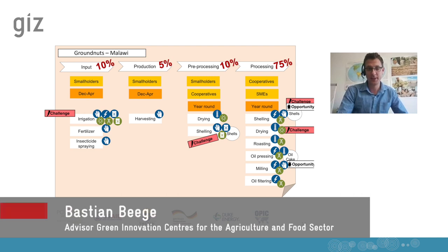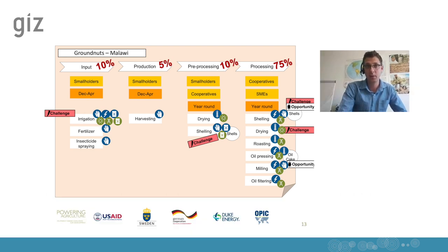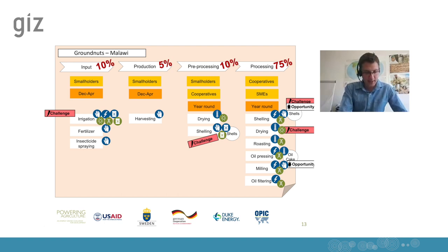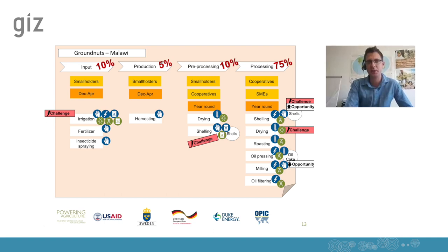Feedback from seven countries showed that energy mapping was very helpful for getting an overall overview of energy needs along the value chain. One piece of feedback was that the percentage indications are not divided into subcategories. Another suggestion was that industrial processing and local processing could be showcased separately. The most relevant recommendation was to develop the mapping further to also integrate economic and business aspects, as this becomes much more relevant and helpful for projects that are already more advanced.